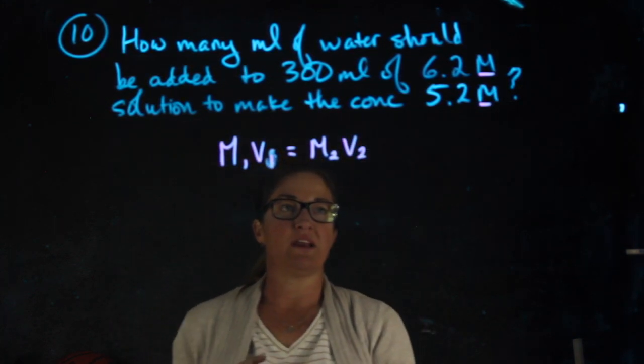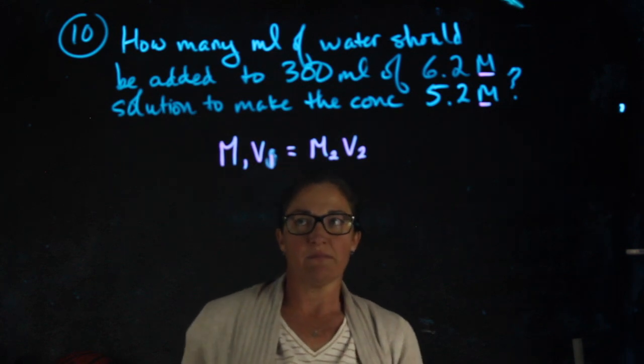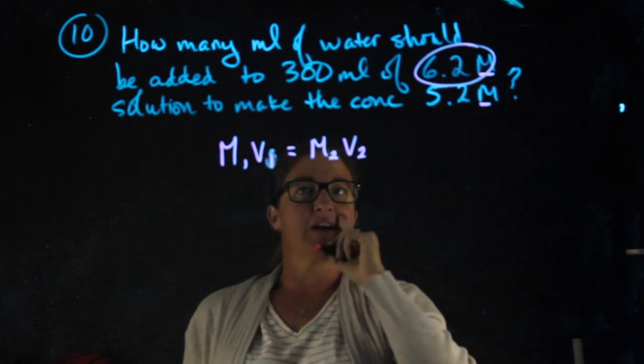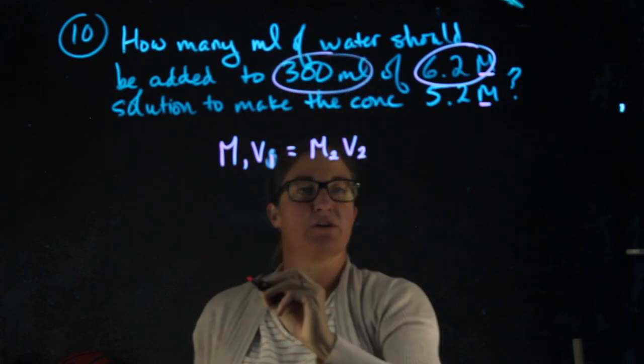M1 V1 equals M2 V2. This is my starting molarity. This is my starting volume.